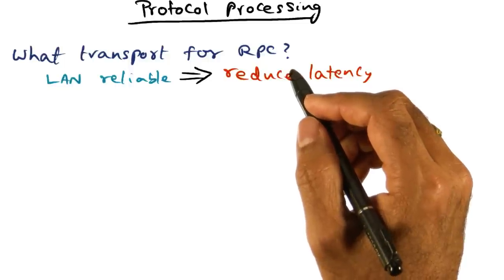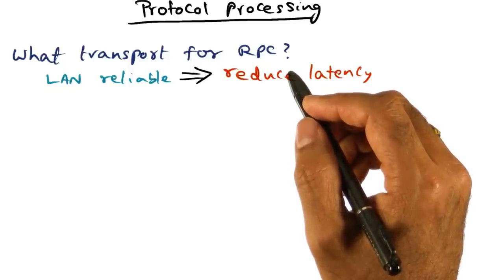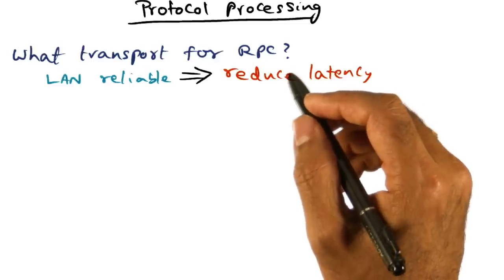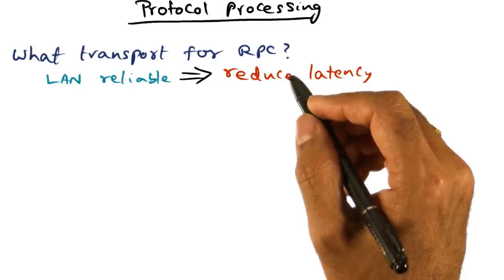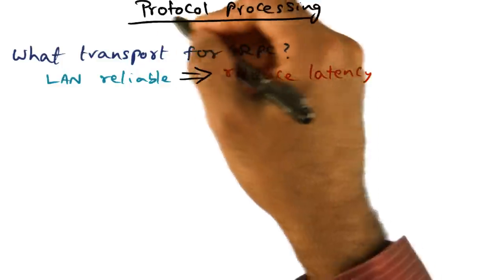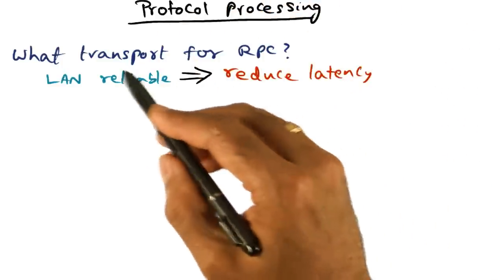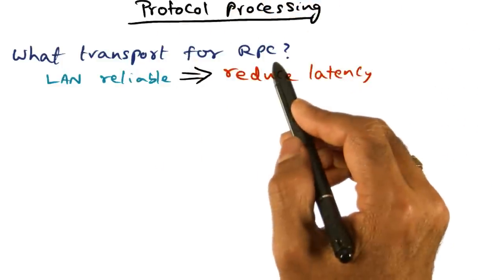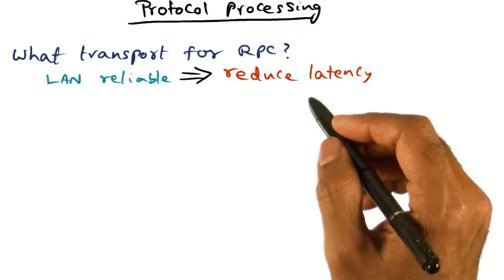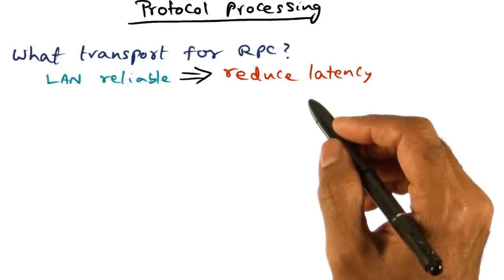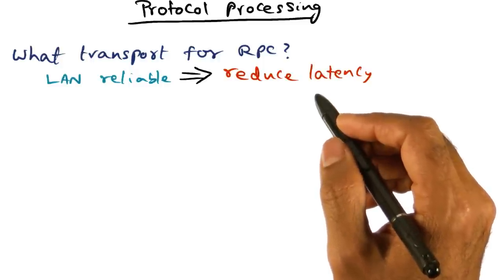We talked about marshaling, data copying, and context switches. The fourth component that adds to the latency of RPC transmission is protocol processing, and that's the next thing we're going to look at. The question is: what transport should we use for the RPC? This is where we want to see how we can take advantage of what the hardware is giving us.